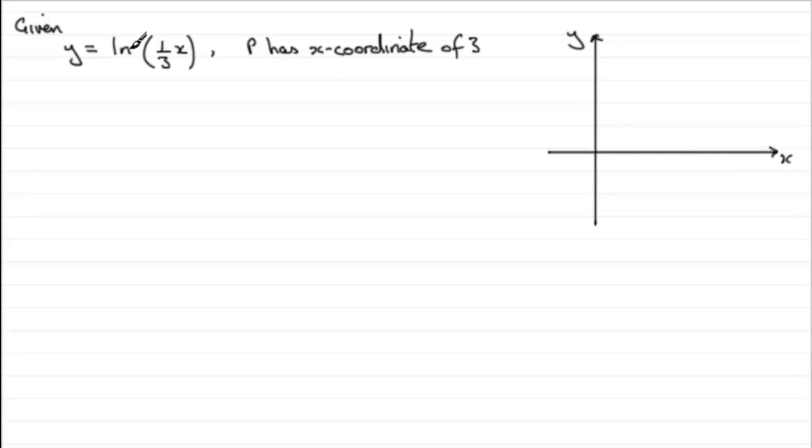So the graph of y equals the natural log of one-third x. Well I know what the graph of y equals the natural log of x looks like. It's a graph looking something like this, coming up through here, going through the 1 and off like that. That's the graph then of y equals natural log of x.